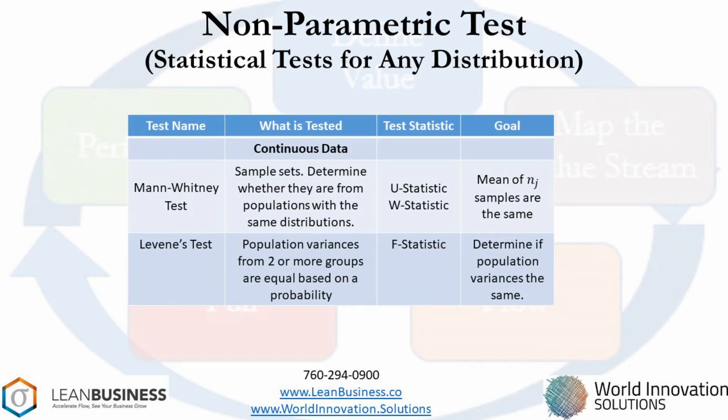Finally, we get to the non-parametric statistical tests. These are the tests you use when the population distribution is not normal or you don't know what the population distribution is. Fortunately, the non-parametric tests are almost as accurate as the parametric tests. As a suggestion, you might want to use a parametric and non-parametric test to compare them.